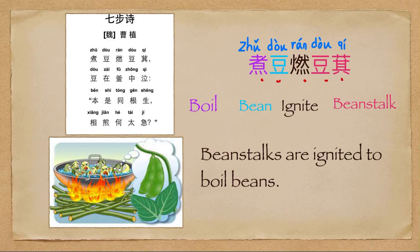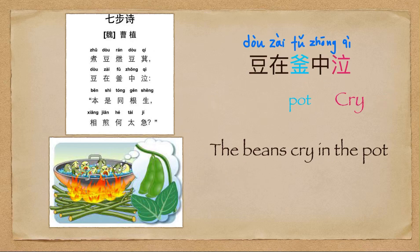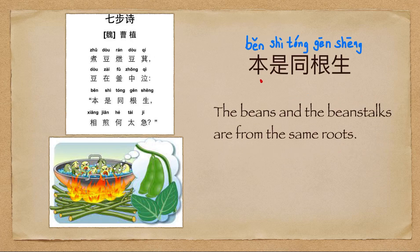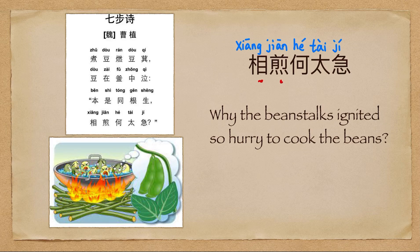The first line means beanstalks are ignited to boil beans. The beans cry in the pot. The beans and the beanstalks are from the same roots. Why are the beanstalks so hurried to cook the beans?